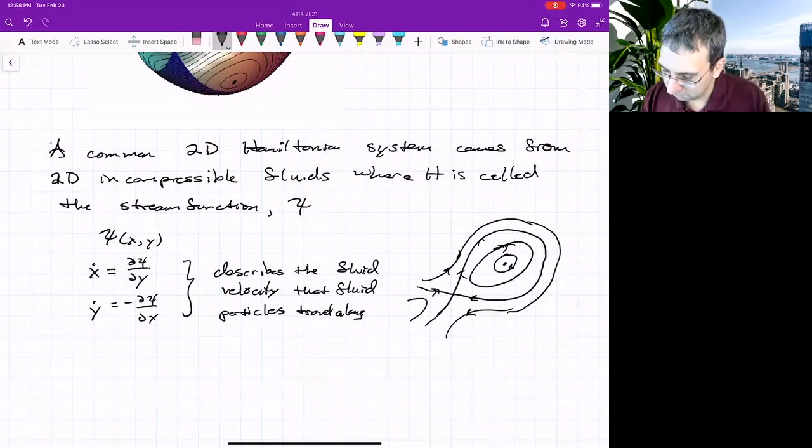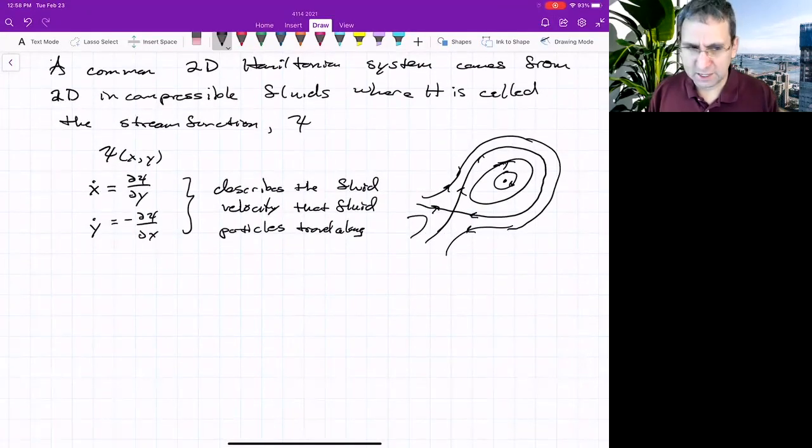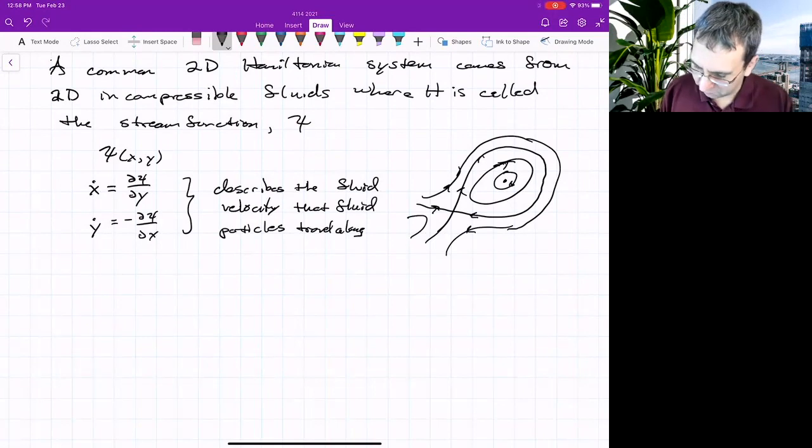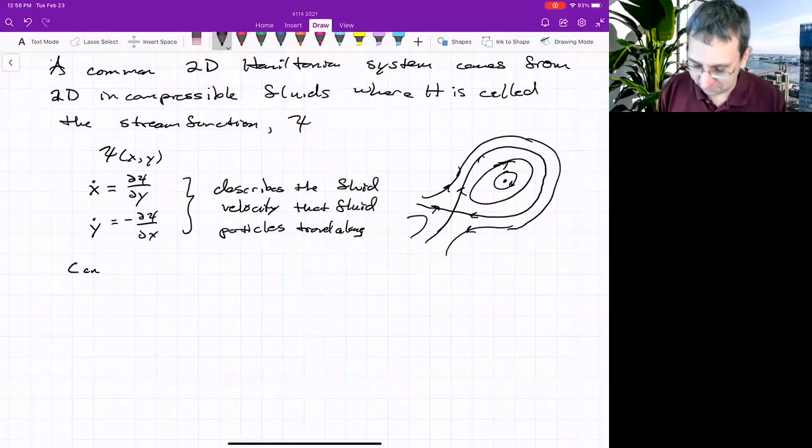And here, you could have fixed points, just like any Hamiltonian system. There could be saddle points. It turns out that you can have fixed points anywhere for a Hamiltonian system. Because once we restrict to a particular type of system, you can't just have fixed points anywhere. But when we've got Hamiltonian systems, or stream function type systems, you can have fixed points anywhere.